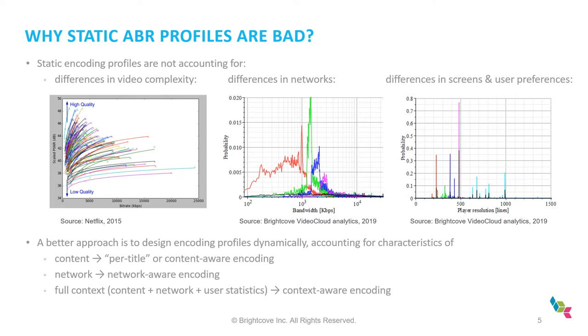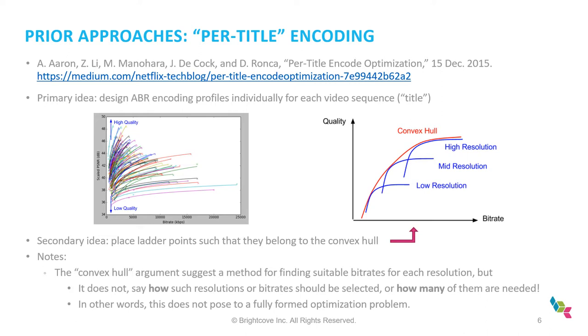So there are several names by which those dynamic designs of encoding profiles are called in industry and literature. Per-title encoding is used following original Netflix blog on this topic. Content-aware encoding is another term. The adaptation to network is called network-aware encoding. And the full context type of optimization is called context-aware. I'll now talk in slightly more details about what each does, because we will effectively be using same concept later when we talk about web streaming.